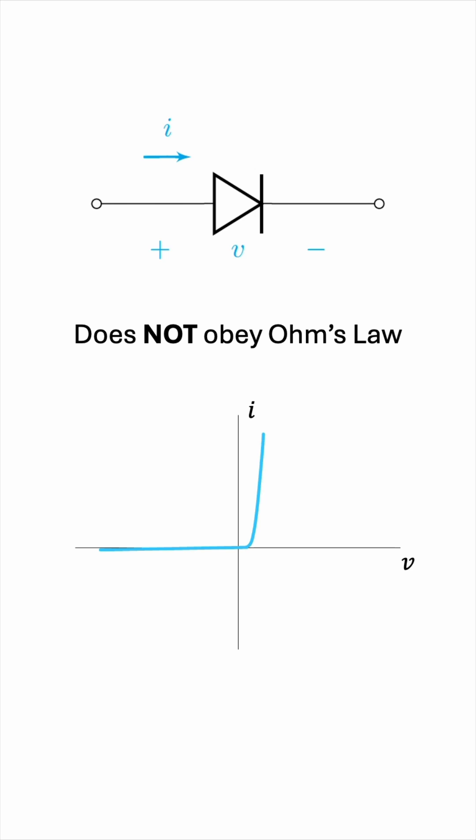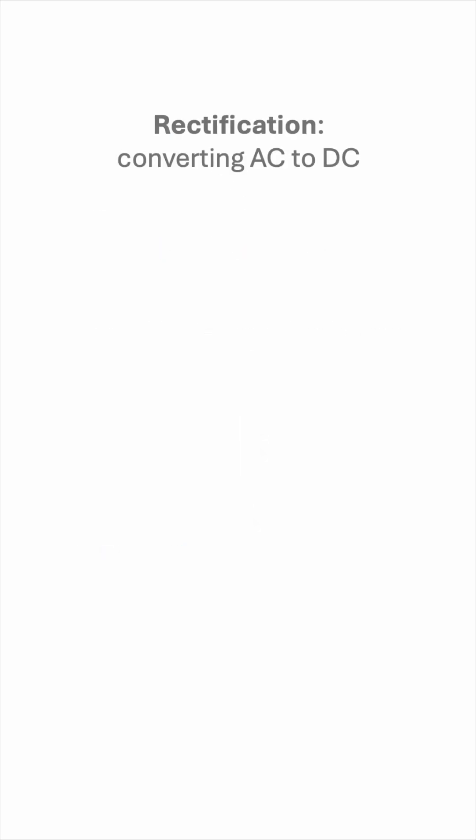The fact that the diode only allows current to flow in one direction makes it useful for many applications. The most important one is called rectification, which is converting AC to DC.